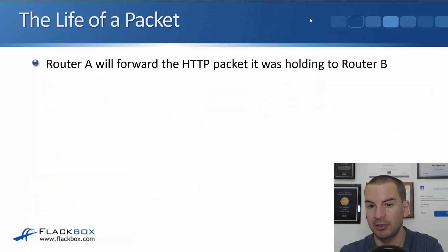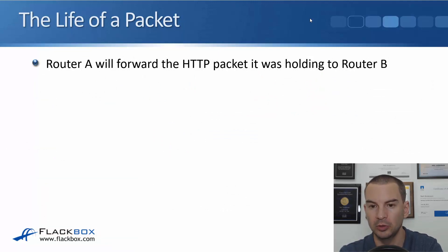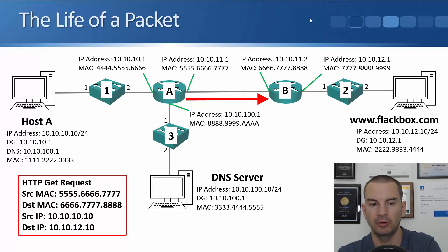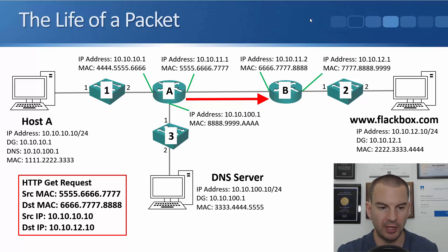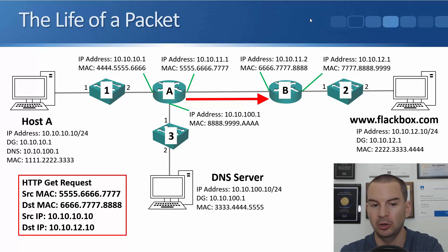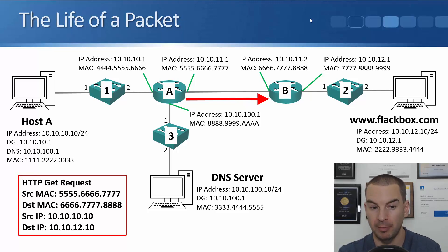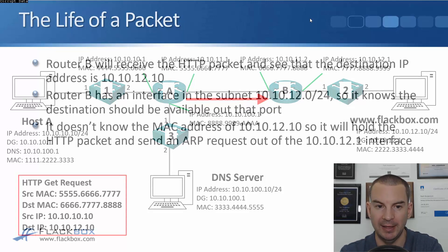Router A will get that information and can now forward the HTTP packet it was holding to Router B. It's the original HTTP GET request from host A. The source IP is still 10.10.10.10 going to the destination IP of 10.10.12.10 on the web server, but the source and destination MAC addresses get updated for this hop: source MAC 5.6.7, destination MAC 6.7.8.